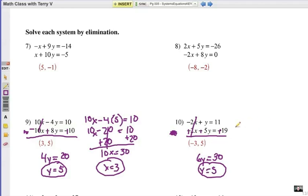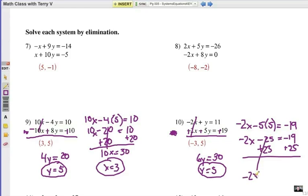Substitute it into either equation. I'll go ahead and put it in the second equation. The original equation was negative 2X minus 5 times the 5 I got for my answer equals negative 19. Got to be careful of the signs there. So negative 2X minus 25 equals negative 19. Add 25 to each side, and I'm going to get negative 2X equals 6, and X would be a negative 3. As indicated in that ordered pair.